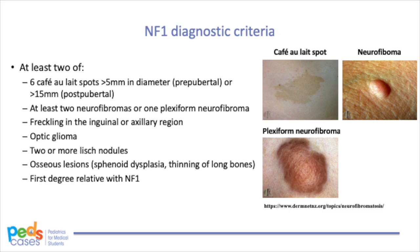(3) Freckling in the inguinal and/or axillary region. (4) Optic gliomas — the most common CNS tumor in NF1, occurring in 15% of children younger than 6 years with NF1, rarely in older children. Patients can present with headache, visual field defects, proptosis, strabismus, nausea, anorexia, hypothalamic dysfunction, and precocious puberty. (5) Two or more Lisch nodules on the iris — hamartomas that may require slit lamp exam to diagnose but do not affect vision. (6) Osseous lesions including sphenoid dysplasia and thinning of long bones. (7) A first-degree relative with NF1.